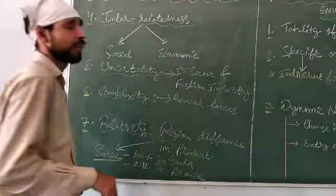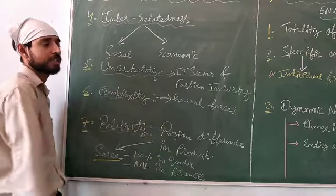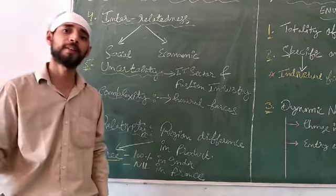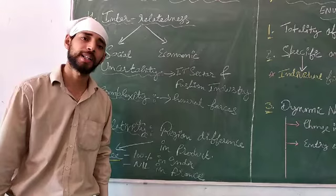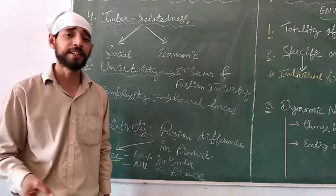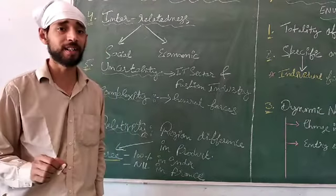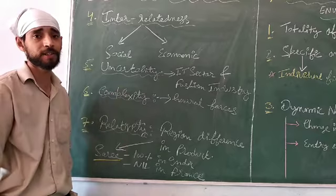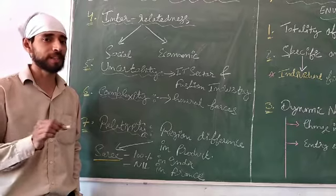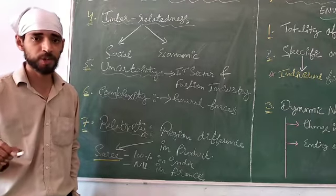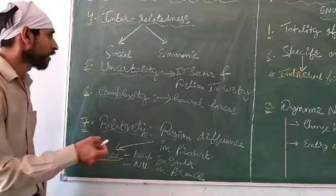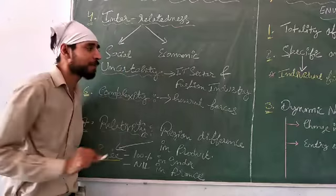The next feature is uncertainty. Every business operates with uncertainty. There is no such thing as 0% risk in any business. No business can operate without some degree of risk. So there is uncertainty in every business.